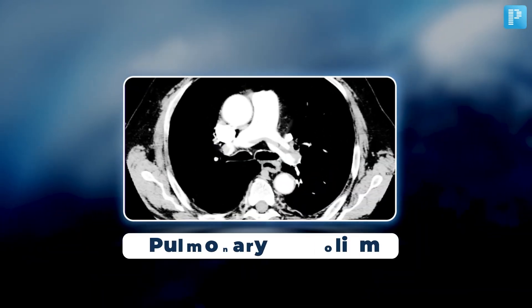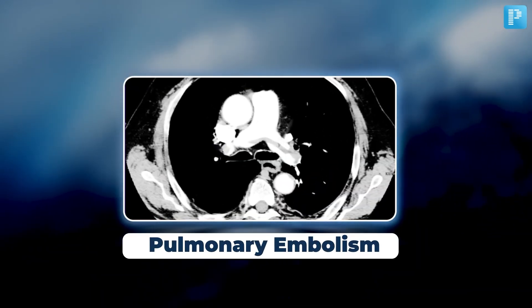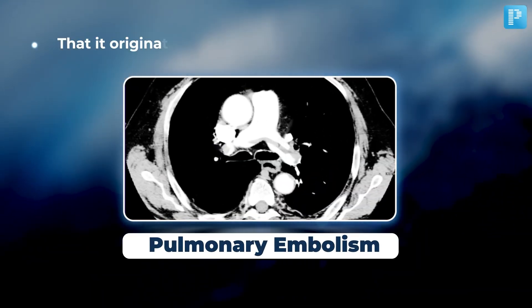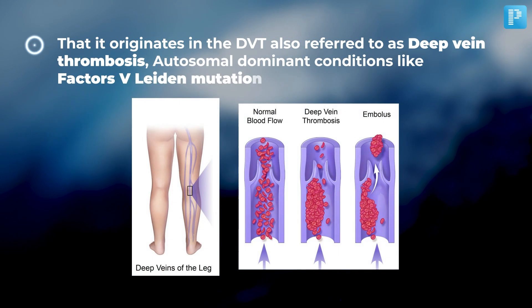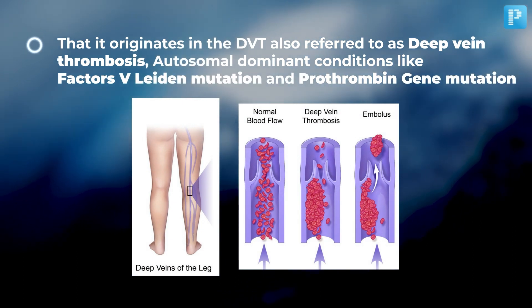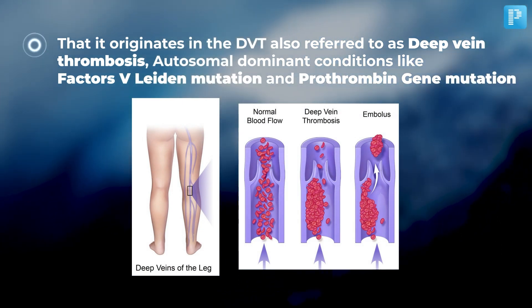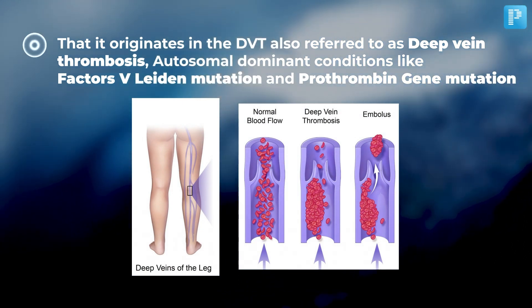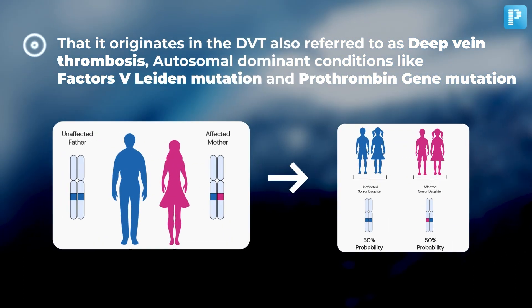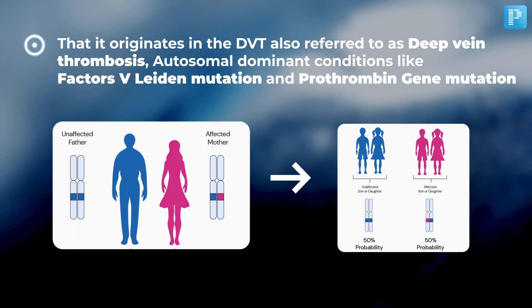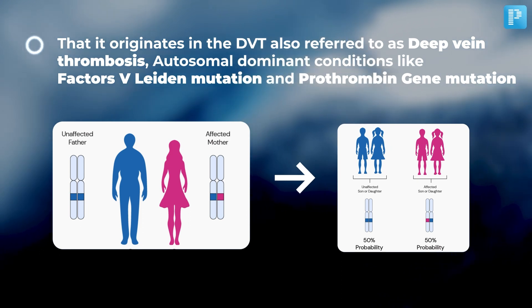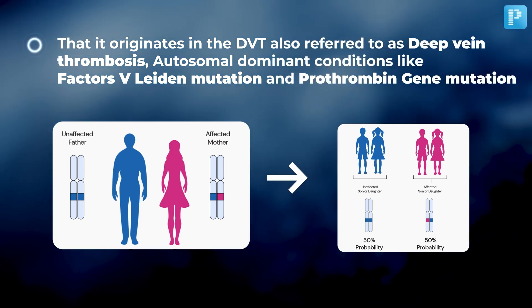Moving on to the next image, which showed a case of pulmonary embolism. The key findings show that it originates in DVT, also referred to as deep vein thrombosis. Autosomal dominant conditions such as Factor V Leiden mutation and prothrombin gene mutation are associated risk factors.